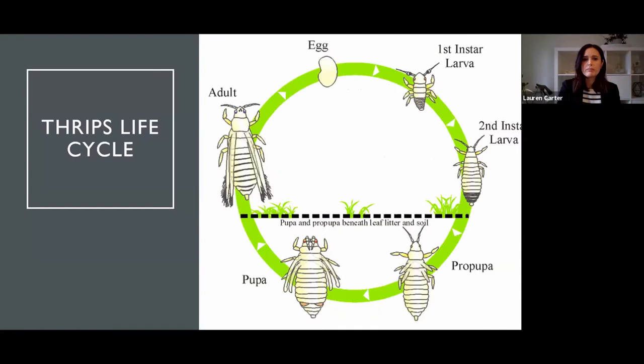I'm sure most of you are familiar with the thrips life cycle. The thing that makes it really different than other pests is it's got both above and below ground life stages. So biocontrol for thrips is really about getting all of those stages so none of it escapes.